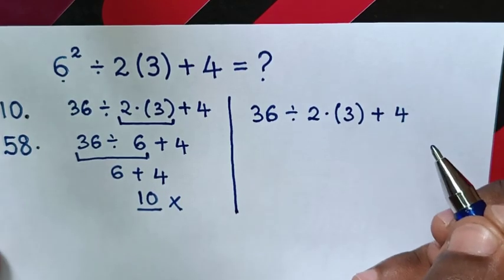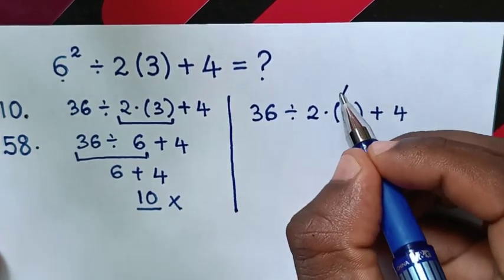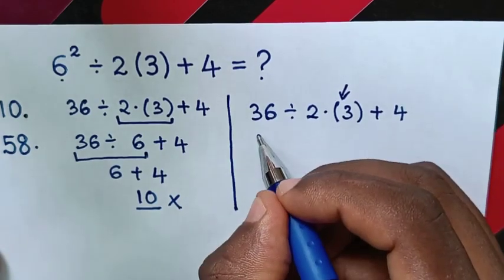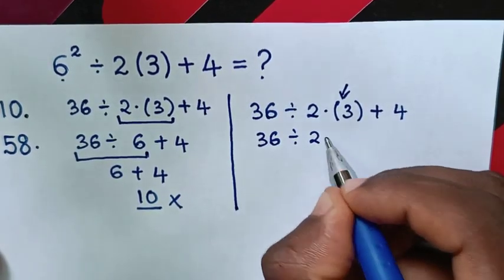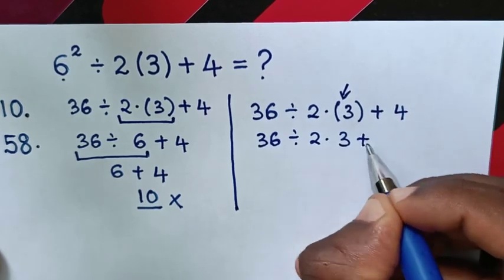Then, in the next step, we open these brackets. Then, it will be 36 divided by 2 times 3 plus 4.